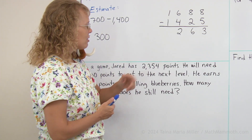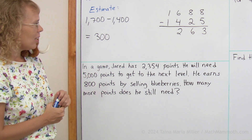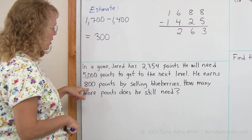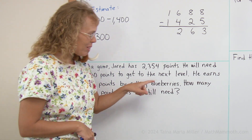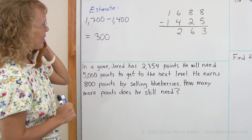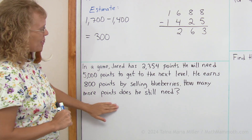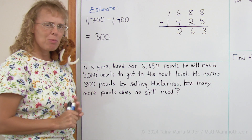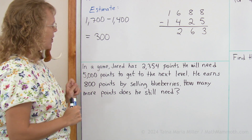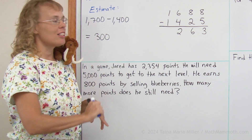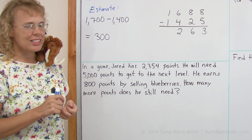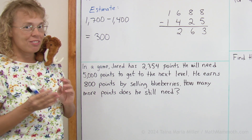In a game, Jared has 2354 points. He will need 5000 points to get to the next level. Now he earns 800 points by selling blueberries. How many more points does he still need? Maybe you want to read that again if it's not clear in your mind. He needs 5000 points to get to the next level, and now he's earning 800 points. How many more points does he still need to have 5000 points?